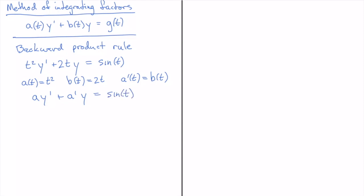That's what my equation is. Why that's important is that I can always go backwards through a product rule and rewrite this as (a·y)' = sin(t). Then if I take an antiderivative, I get a·y equal to the antiderivative of sin(t), which is −cos(t). And once I go back and remember that a(t) is actually t², I get t²·y = −cos(t).